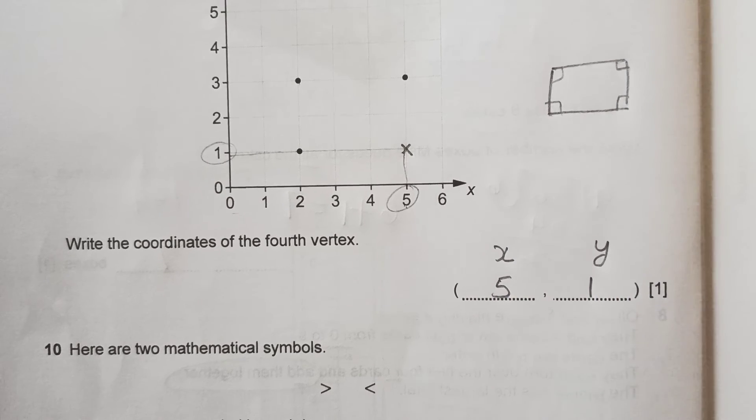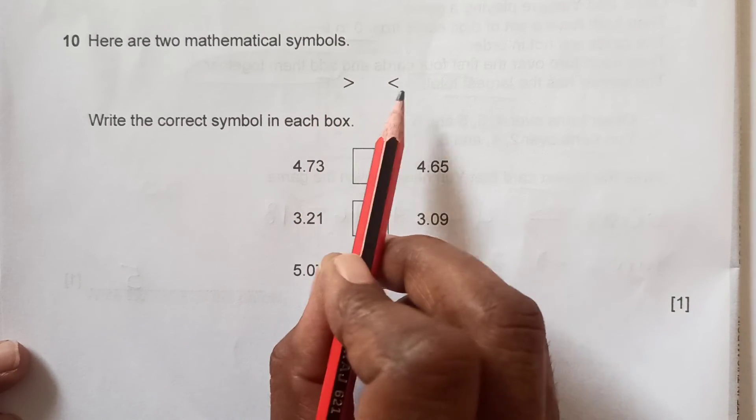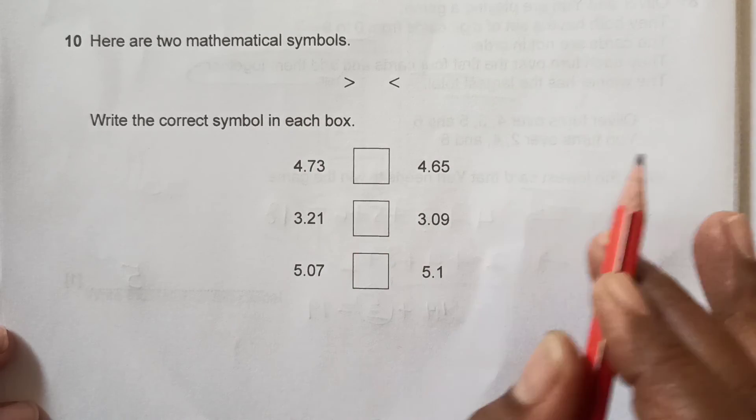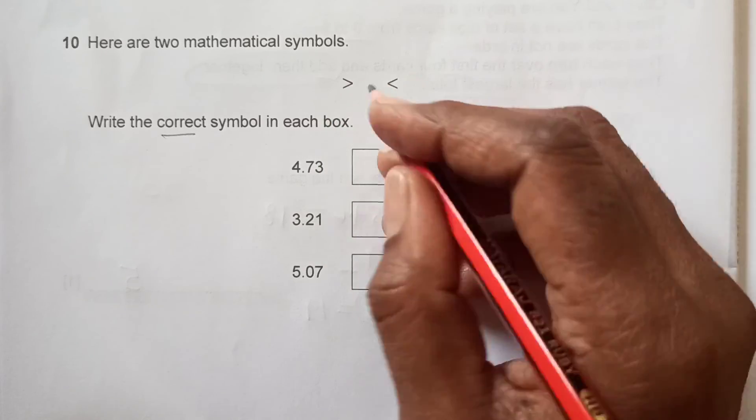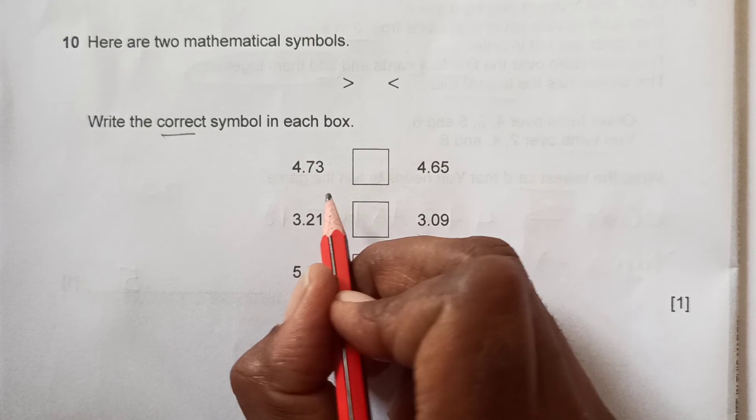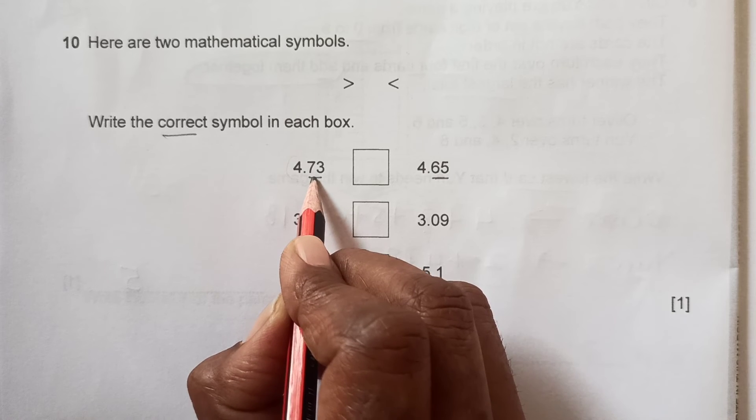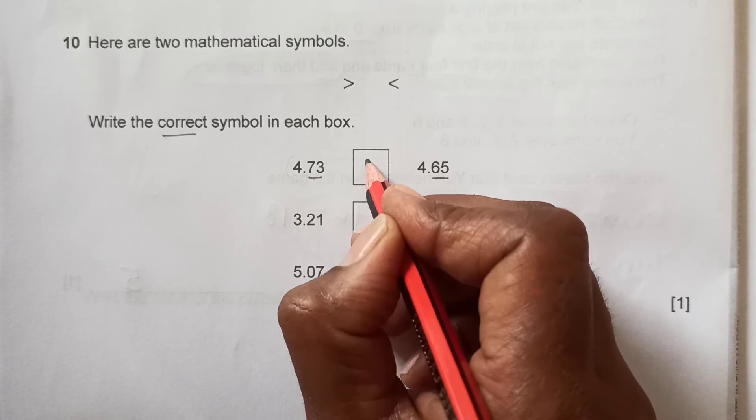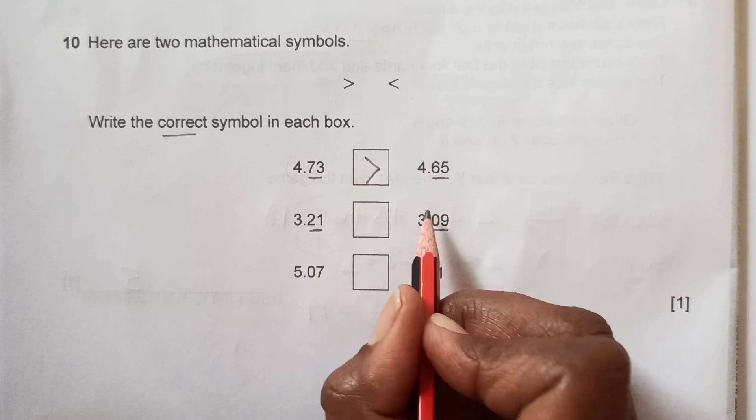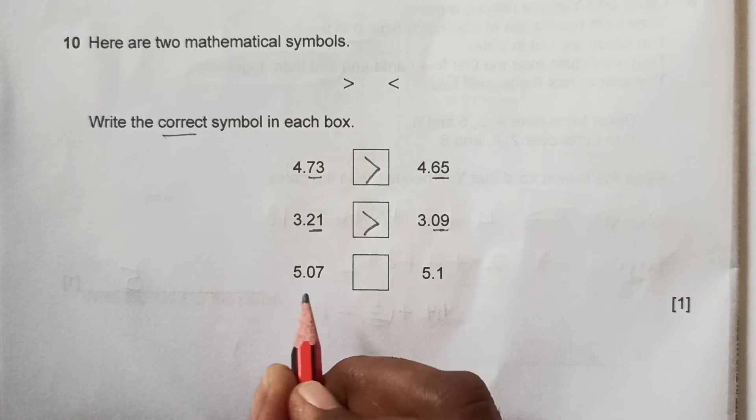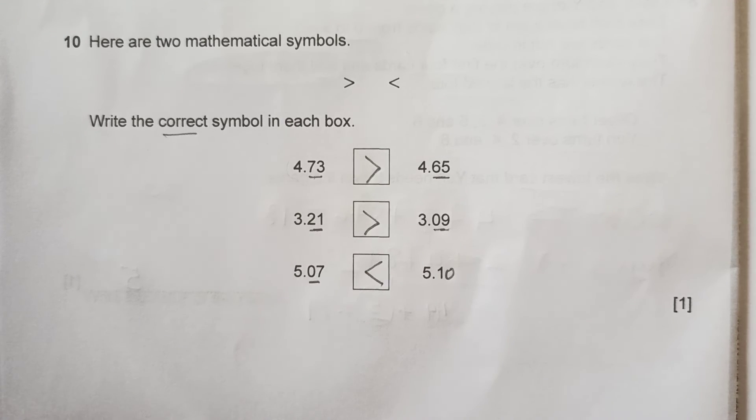Question number 10: Here are two mathematical symbols - greater than and less than. Write the correct symbol in each box. You know, like an alligator, its mouth is going to open towards the bigger number. This is 4.73, 4.65 - the whole number is the same, so we will just compare the decimal part. 73 is greater than 65, so this is going to be this side. This is 21, this is 09 - the whole part is the same, so again it's towards this side. This is 7 and this is 10, so this one is greater, so it's like this.